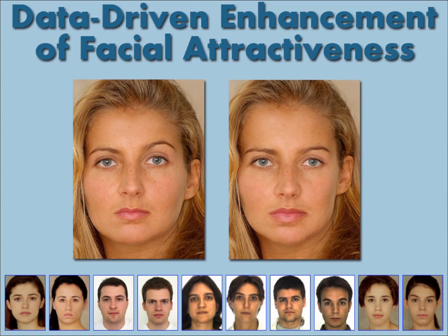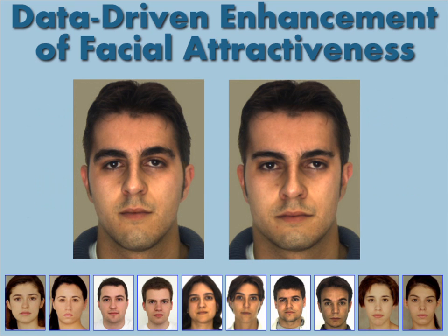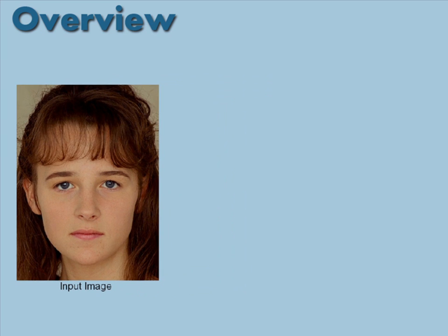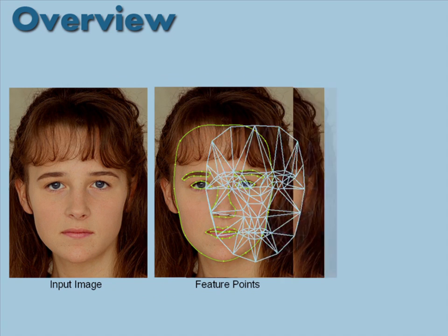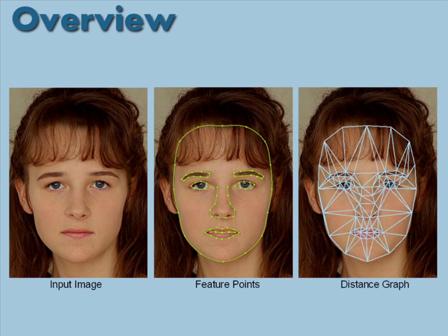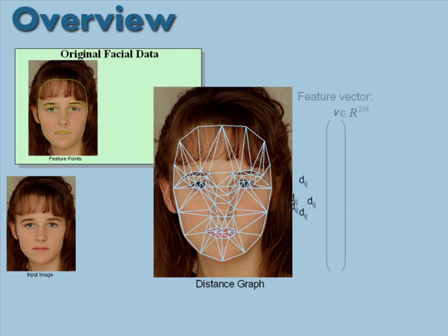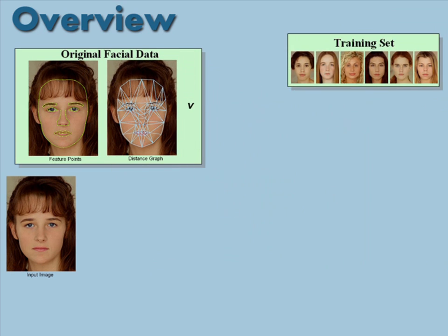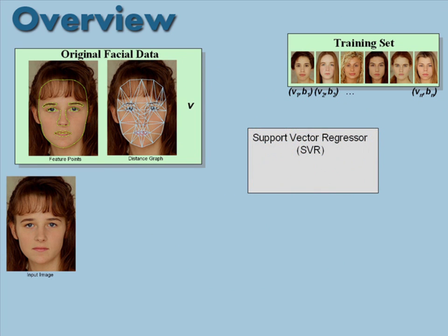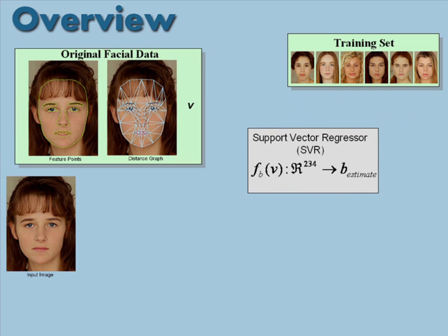In this work, we explore the data-driven approach to aesthetic enhancement of human faces in frontal photographs. Given an input portrait image, we identify 84 predetermined facial feature points and compute a planar set of distances between them. We collect these distances into a feature distance vector V, a vector in a high dimensional space. The key component in our algorithm is an automatic facial attractiveness rating machine, a support vector regressor trained on databases of faces with accompanying facial attractiveness ratings collected from a group of human raters and their corresponding feature distance vectors.